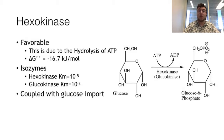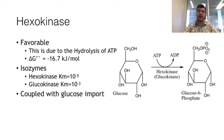Hexokinase has different isozymes. The most specific one is for glucose. Hexokinase is found in organs which rely on glucose metabolism, such as muscle. This hexokinase enzyme has a relatively higher affinity and therefore a lower KM. The glucokinase isozyme is found in organs which rely more on fatty acid metabolism, like the liver, which has a lower affinity or higher KM value. This is because liver tissues store glucose for the rest of the body.